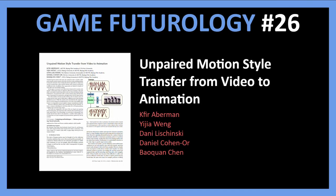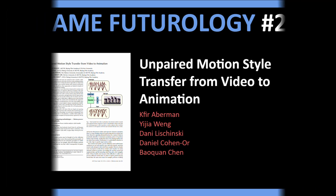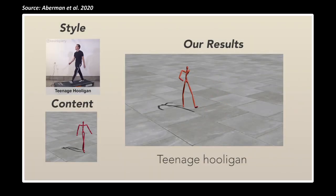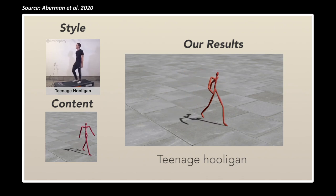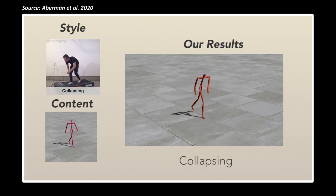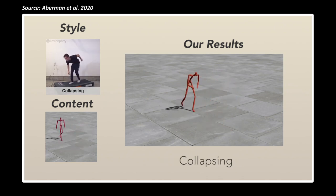Now that we understand the meaning of the two, let's take a look at today's paper. It is titled 'Unpaired Motion Style Transfer from Video to Animation' and is published at this year's SIGGRAPH conference by researchers from Beijing Film Academy. They present a framework to transfer the style of motion from a video to a 3D character while preserving the content of the source motion of the character.